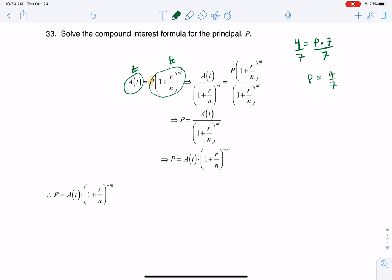So if I want to get P isolated, let me go ahead and erase all of my marks here. If I want to get P isolated, I'm just going to divide both sides by 1 plus R over N to the NT. All right, and this is going to cancel. And then I solve for P. And that's what you see happening here.